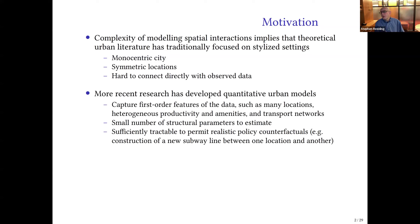In the last ten years or so, there's been a revolution in the development of so-called quantitative urban models. What's distinctive about these models is that they're built to capture first-order features of data on real world cities — many different locations, such as census blocks or census tracts, that are allowed to be asymmetric and heterogeneous. Each census tract might differ in terms of its productivity, amenities, scenic views, and access to the transport network. This means we can set the model up so that it rationalizes the observed distribution of employment, residence, and land prices, and then perform counterfactual policy experiments.